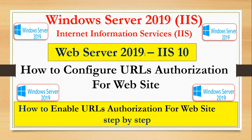Hey guys, welcome to my YouTube channel. In this video, we are going to learn how we can enable URL authorization. The situation is, for example, you have an Active Directory domain controller with certain users and groups, and you want to give access to those users. They will have to submit their username and password, and then only they will get authorization — first authentication, then authorization.